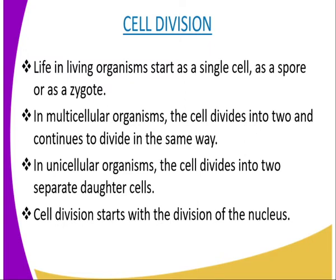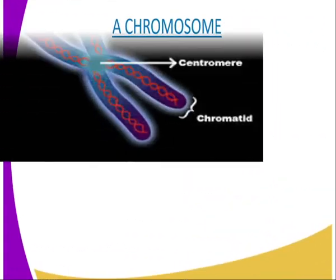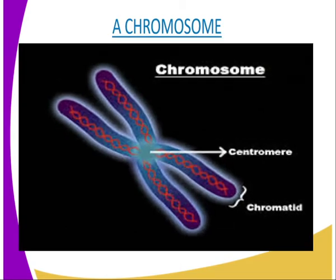Cell divisions start with division of the nucleus — that is, the chromosomes and the cytoplasm. In the nucleus there are a number of long thread-like structures called chromosomes, which are being represented on our screen. Each cell normally has a fixed number of chromosomes.